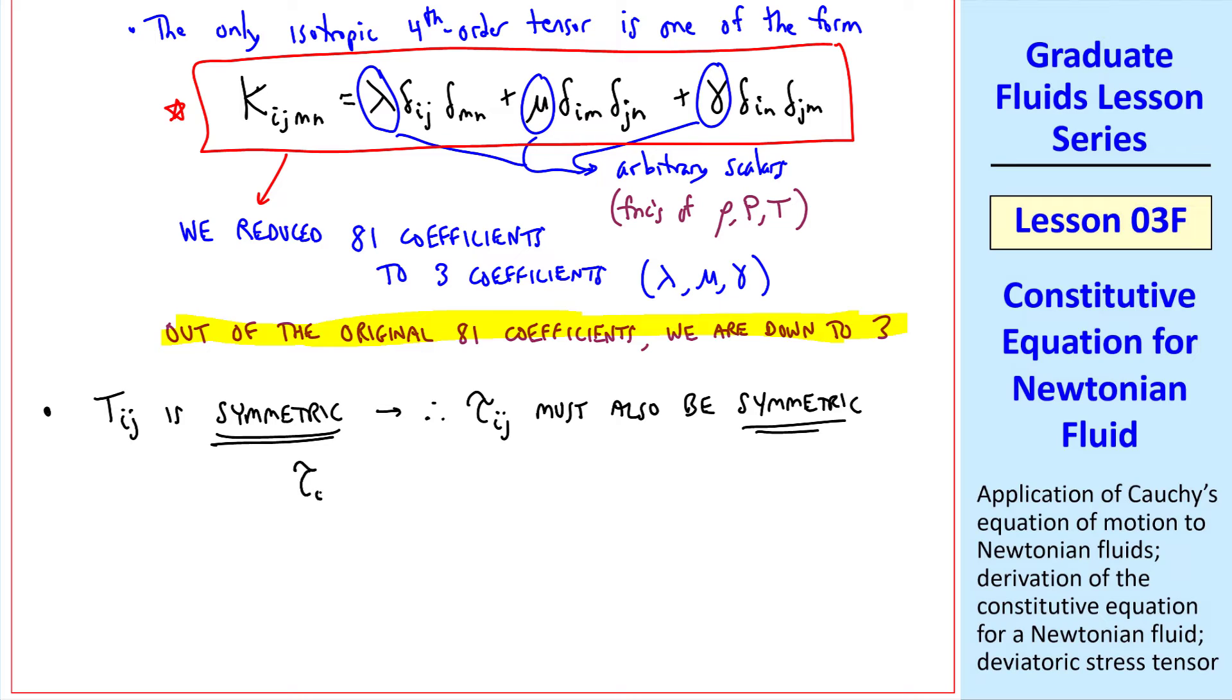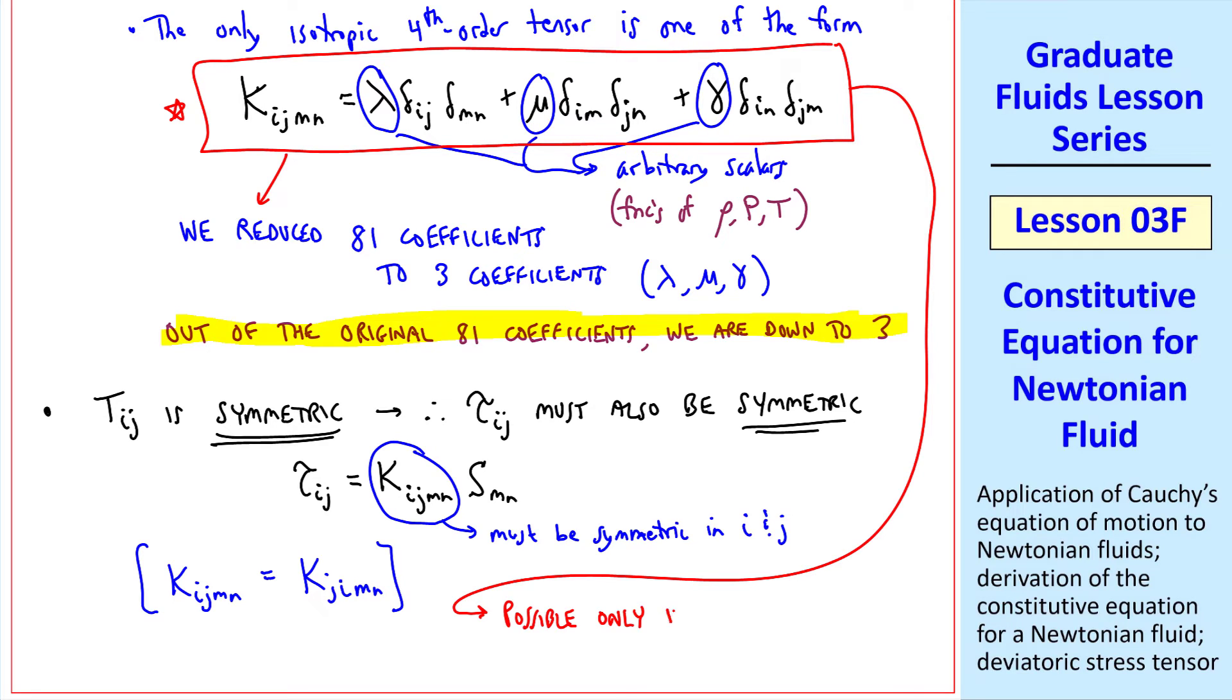So in our equation, tauij is kijmn smn. This kijmn must be symmetric in indices i and j. Mathematically, kijmn must equal kjimn. But if we look up at this equation, we see that that's possible only if gamma and mu are the same. I write that here. It's possible only if gamma equal mu.